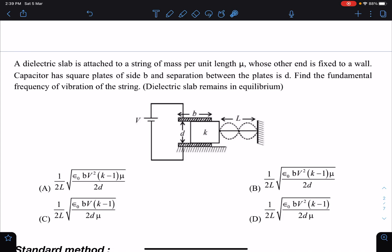So let's talk about this problem by both methods. You can see it's a very standard problem and a nice one. A dielectric slab is attached to a string of mass per unit length mu whose other end is fixed to a wall. Capacitor has square plates of side b and separation between the plates is d. Find the fundamental frequency of vibration of the string, and dielectric slab remains in equilibrium.